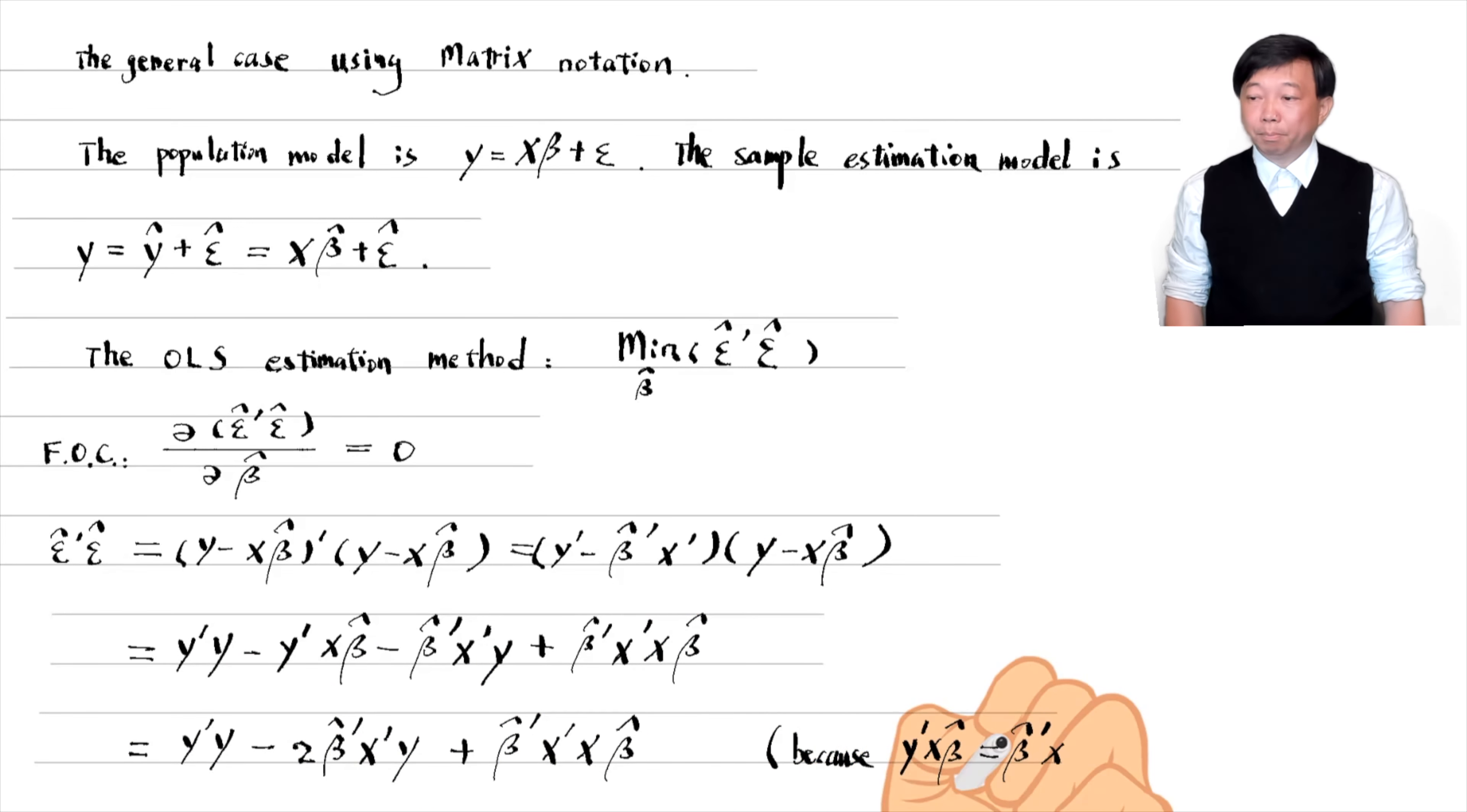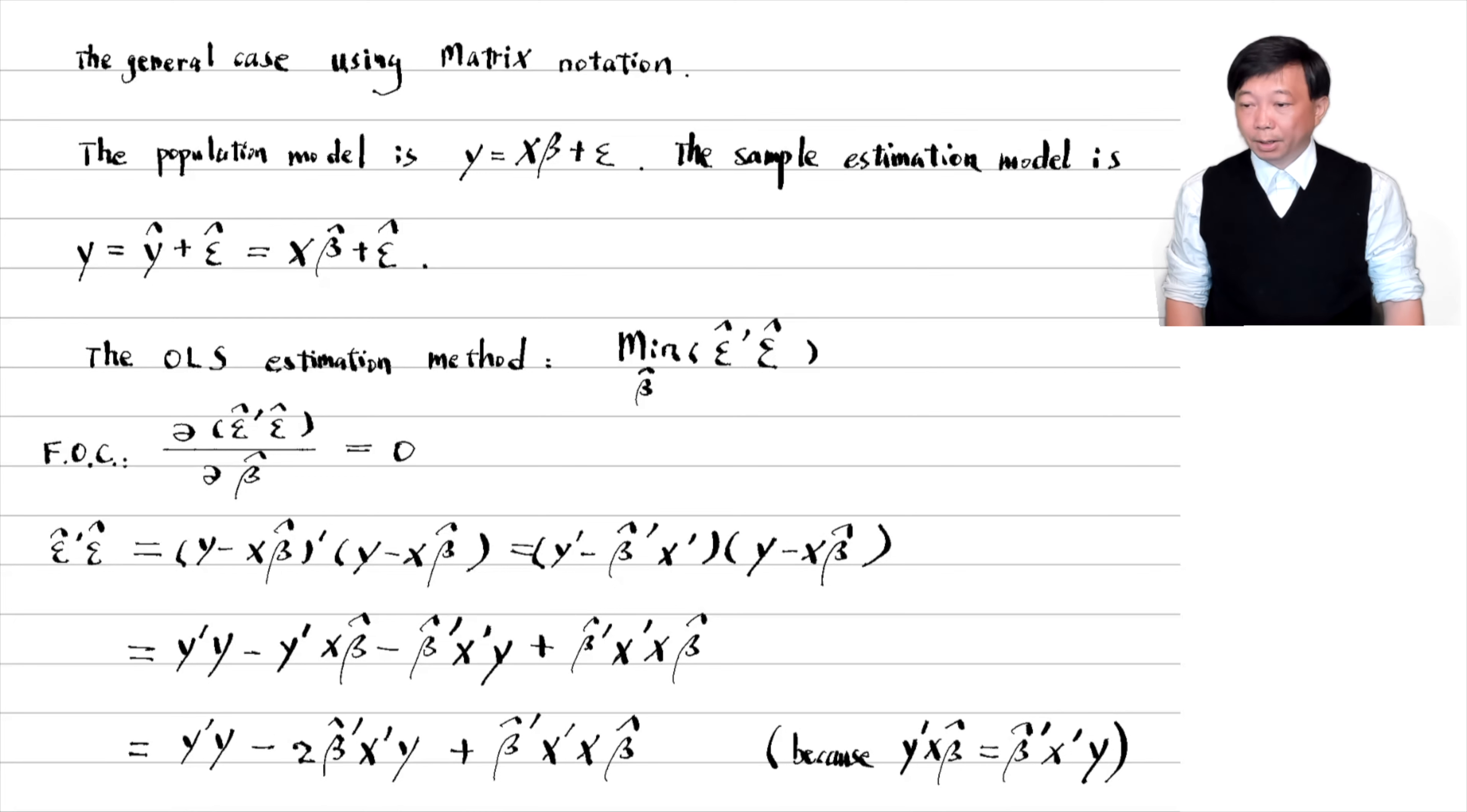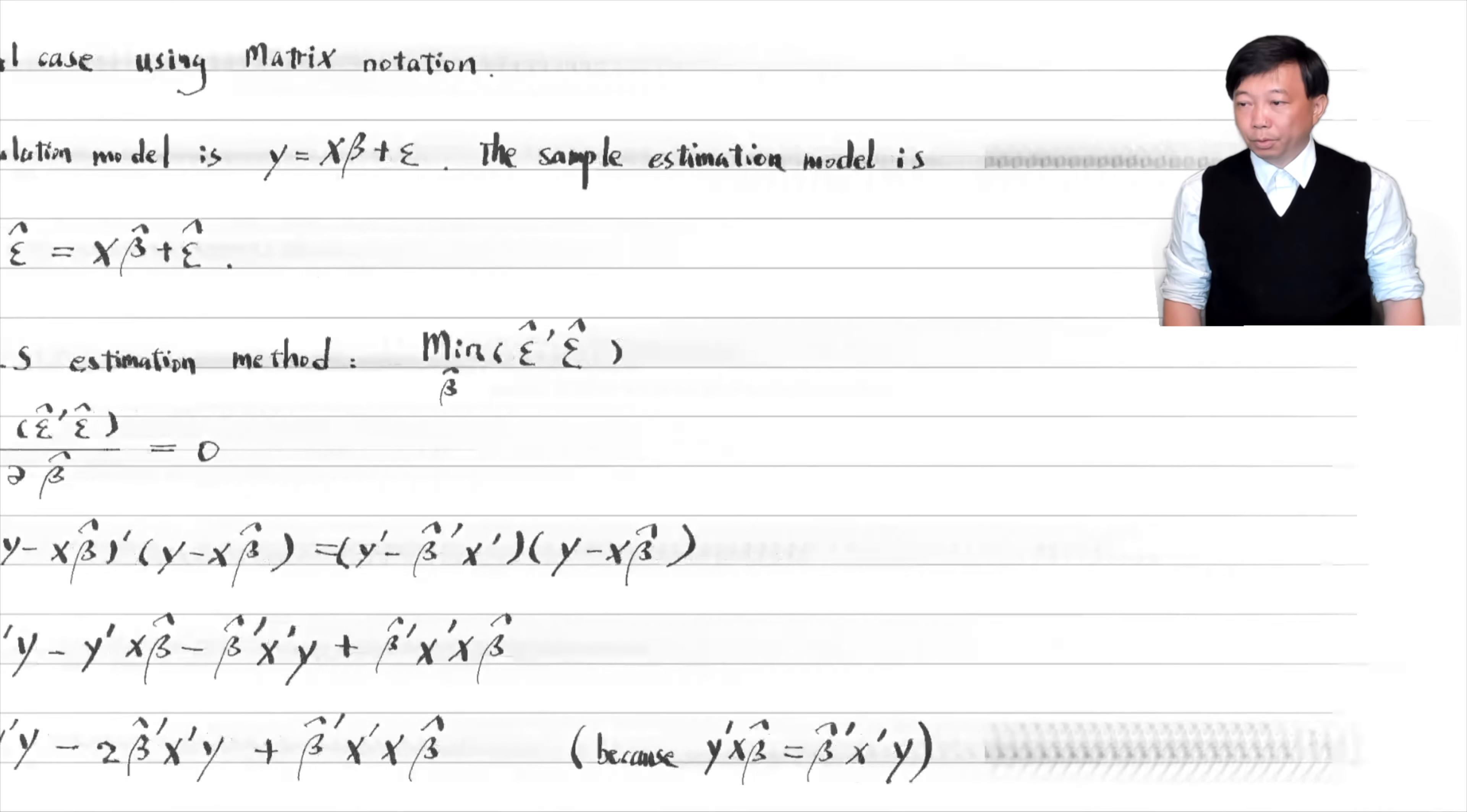Note that the middle two terms are the same because they are scalars and the transpose of a scalar is itself. We then use the vector derivatives rules.